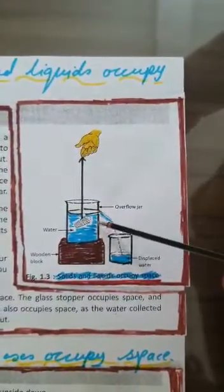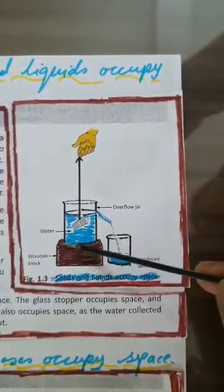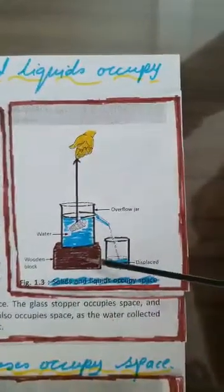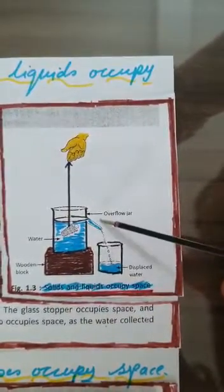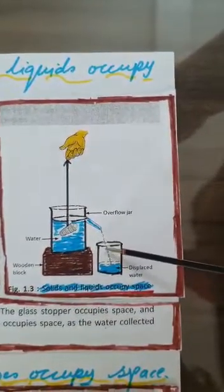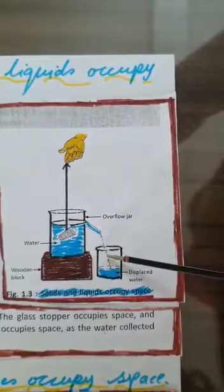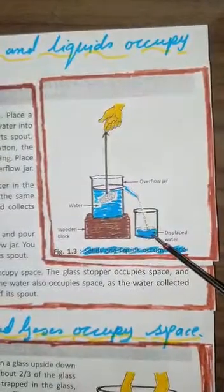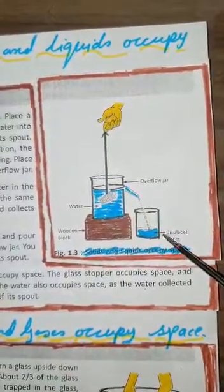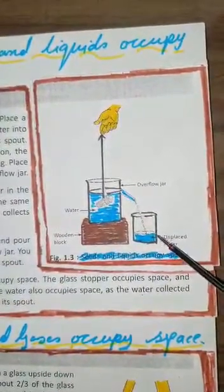Place an overflow jar on a wooden block. This is a wooden block. Slowly pour water into it till the water just starts flowing. See, you can see from the figure, it just starts flowing through its spout. Take a beaker and place it under the spout of the overflow jar.